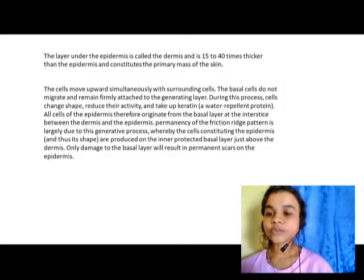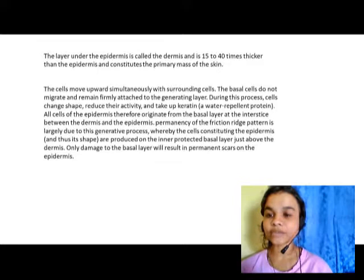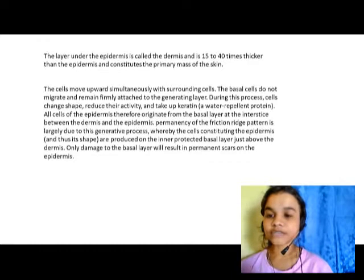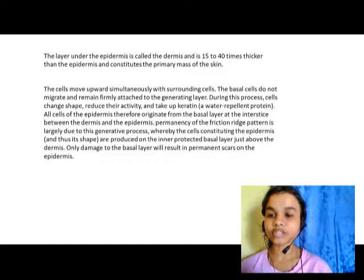The cells move upward simultaneously with surrounding cells. The basal cells do not migrate and remain firmly attached to the generating layer. During this process, cells change shape, reduce their activity, and take up keratin — a water-repellent protein. All cells of the epidermis originate from the basal layer at the interstice between the dermis and the epidermis. The permanency of the friction ridge patterns is largely due to this generative process.